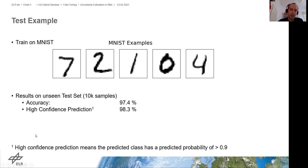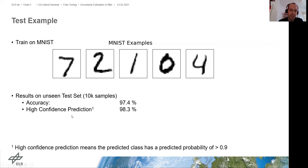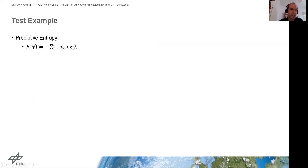Now I was looking at the confidence of those predictions. I said everything where the predicted class has a predicted probability of over 0.9 I would see as a high-confidence prediction, and I got that on 98 percent of the test samples we had a high-confidence prediction.